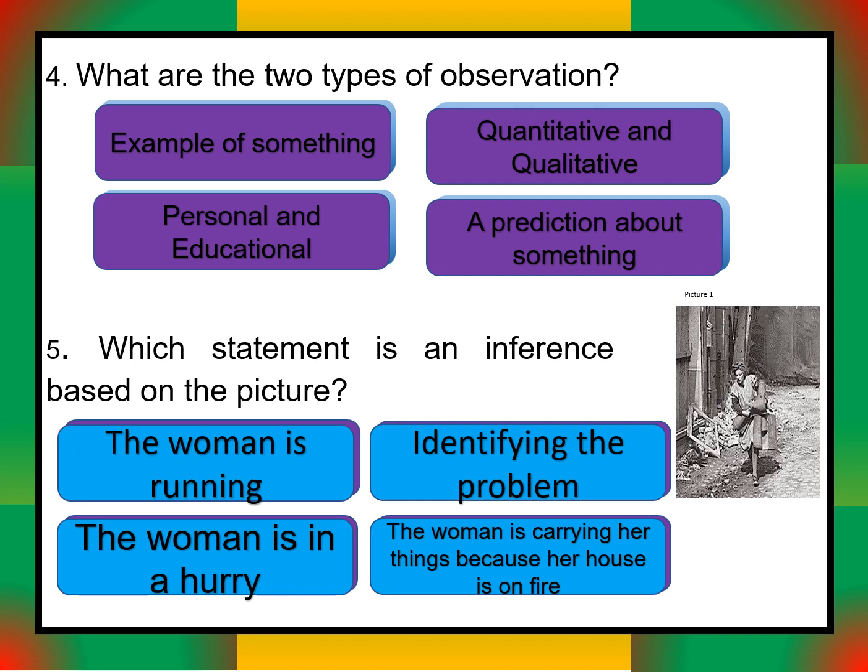Number five: which statement is an inference based on the picture? Options are: the woman is running; the woman is in a hurry; the woman is carrying her things because her house is on fire. Write the answers on your paper.